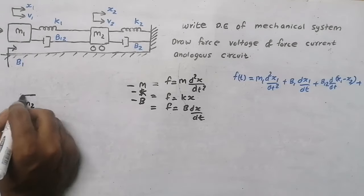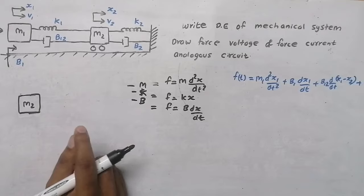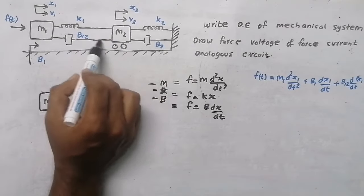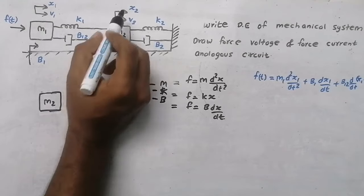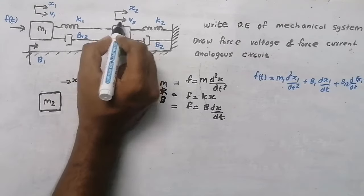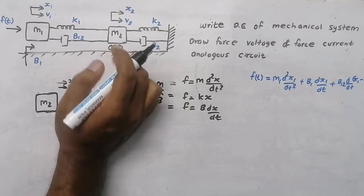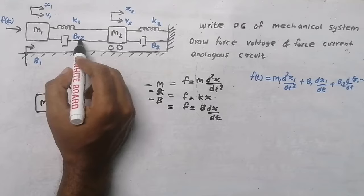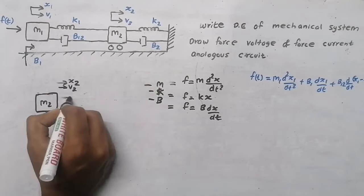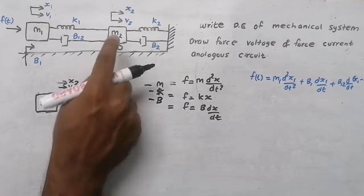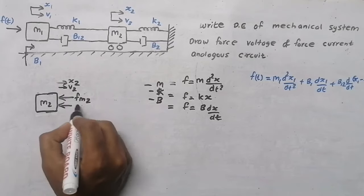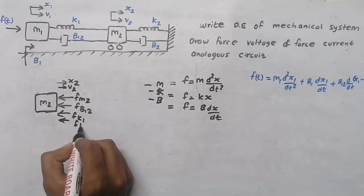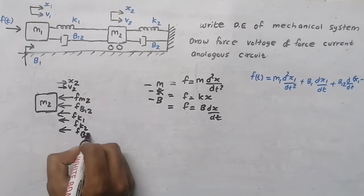Now we draw the free body diagram of mass m2. There is no applied force on mass m2 — f(t) is only applied to mass m1. The displacement is x2 and velocity is v2. The opposing forces are due to dashpot b12, spring k1, spring k2, and dashpot b2. First there is an opposing force fm2 due to mass 2.